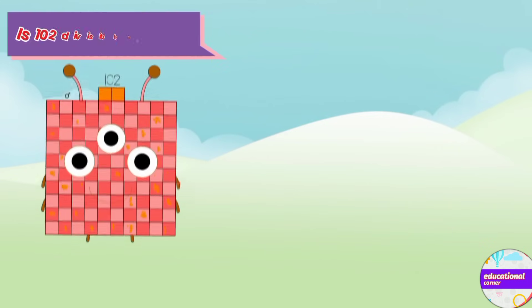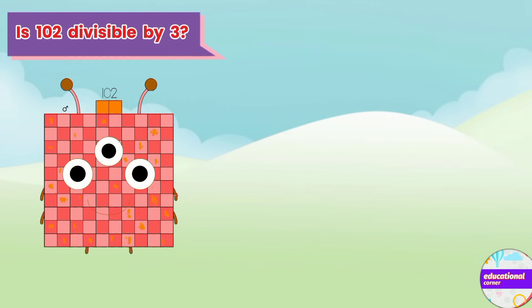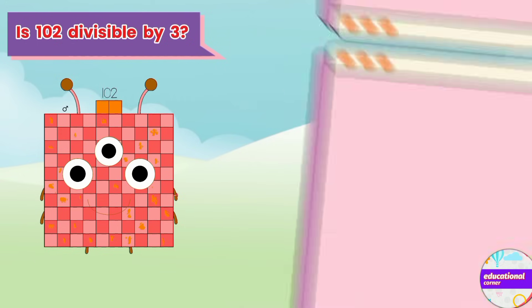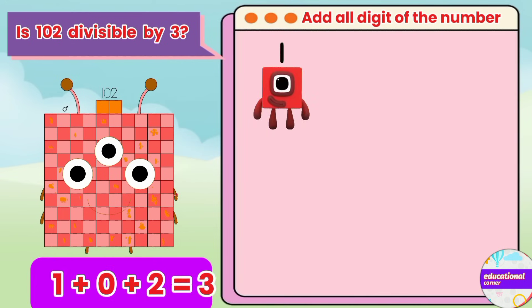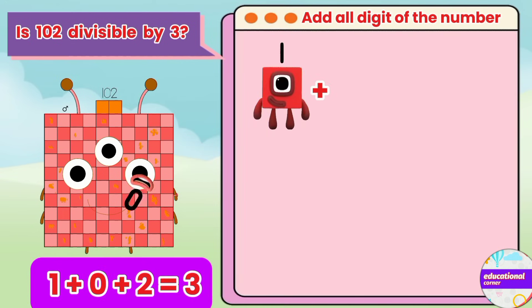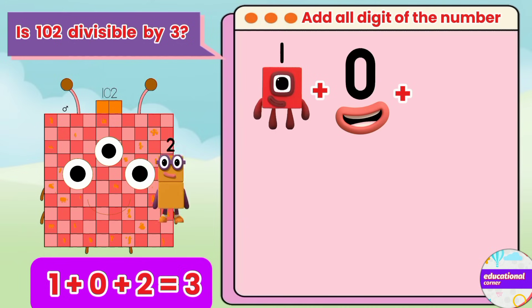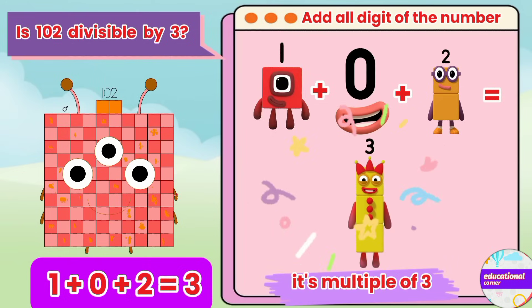Is 102 divisible by 3? Let's check. 1 plus 0 plus 2 equals 3. It's a multiple of 3.